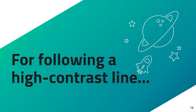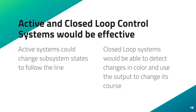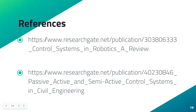For following a high contrast line, passive systems are ineffective because the system would not be able to adapt or self-correct to account for its current environment. For example, a passive system may detect a change in color of the ground but wouldn't be able to change states to follow it. Active systems would be effective because the system would be able to account for a contrasting line — due to the system's ability to self-correct and change states, it would be able to follow the line. These are our references, and thank you.